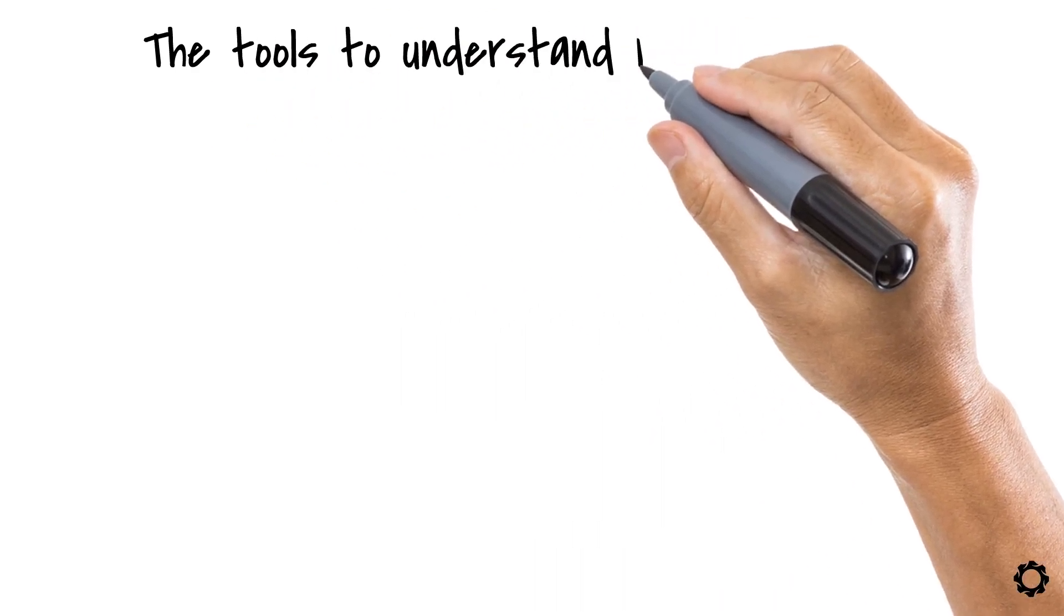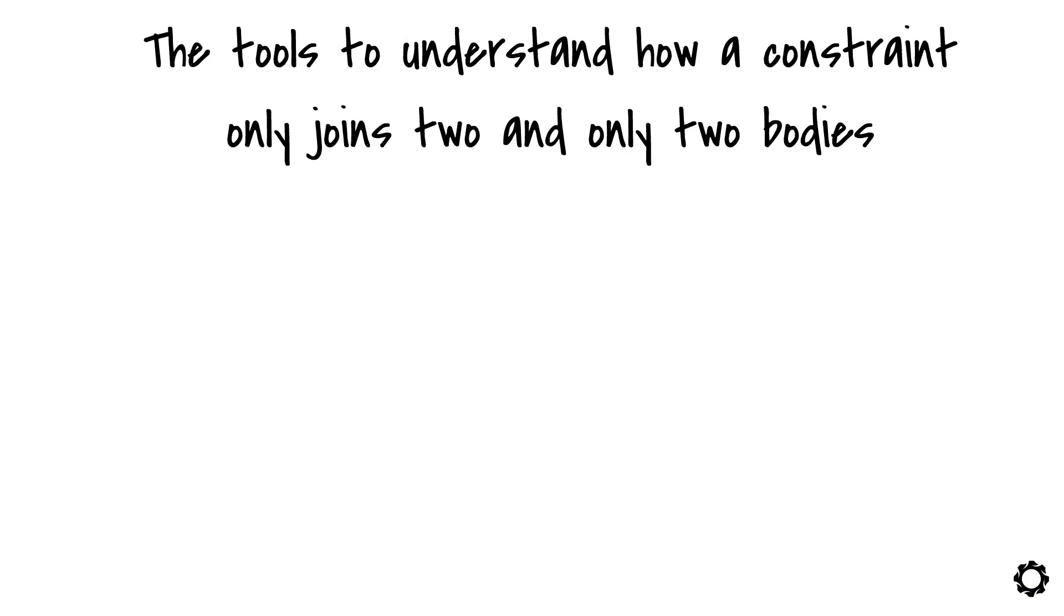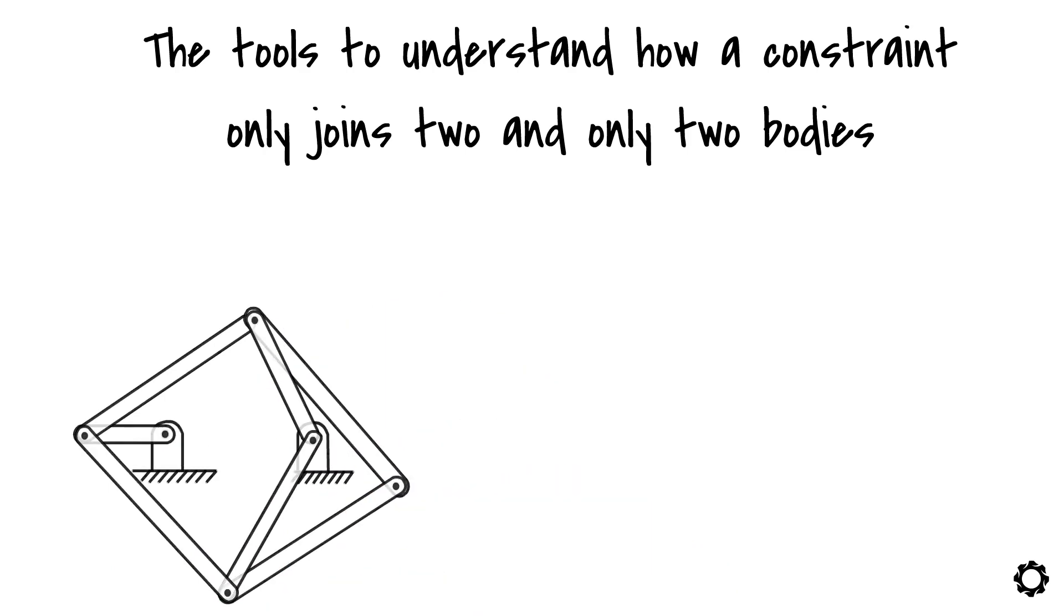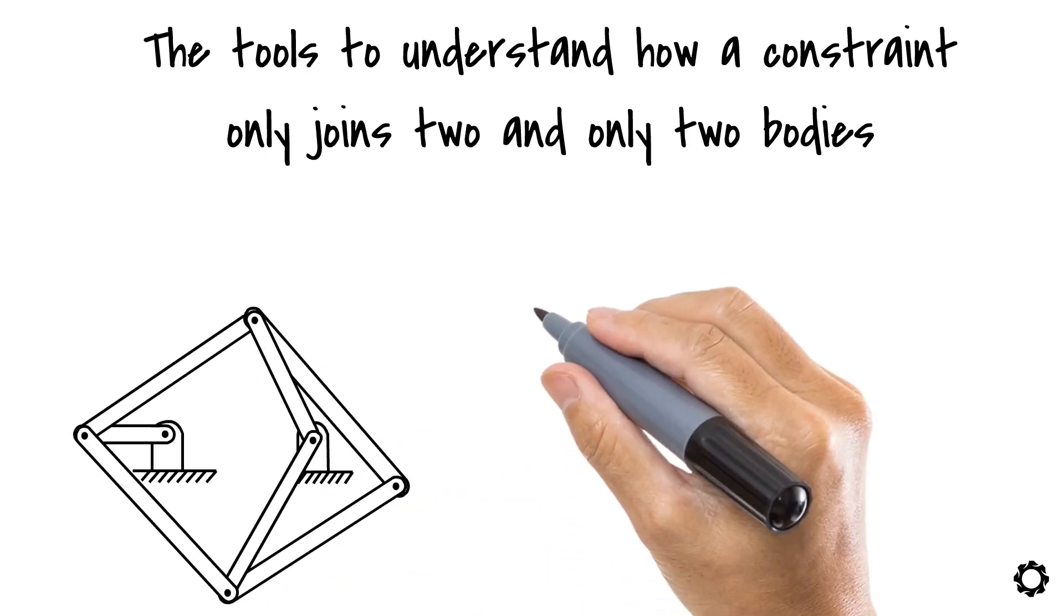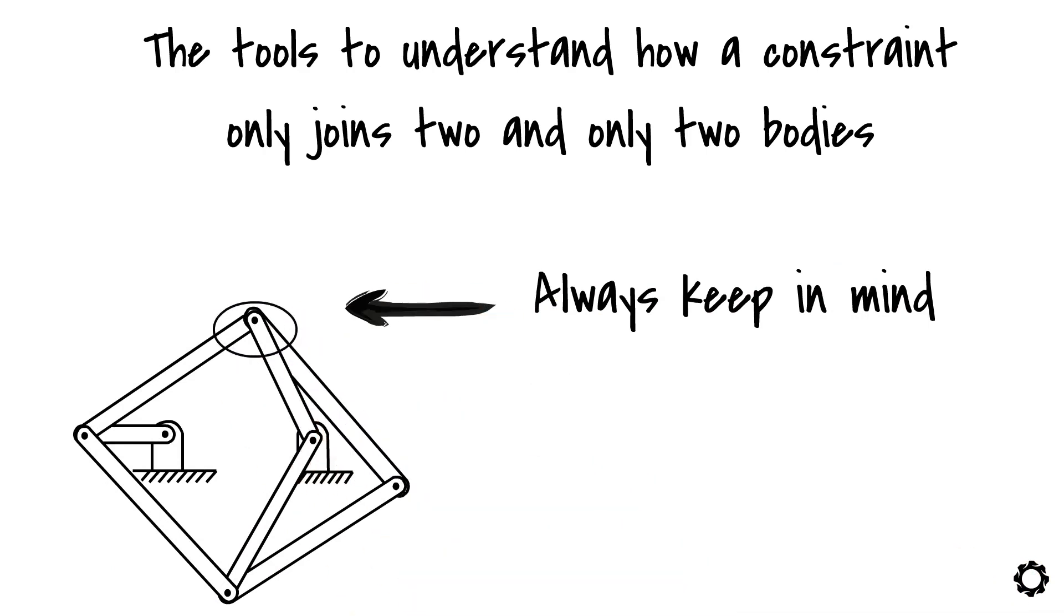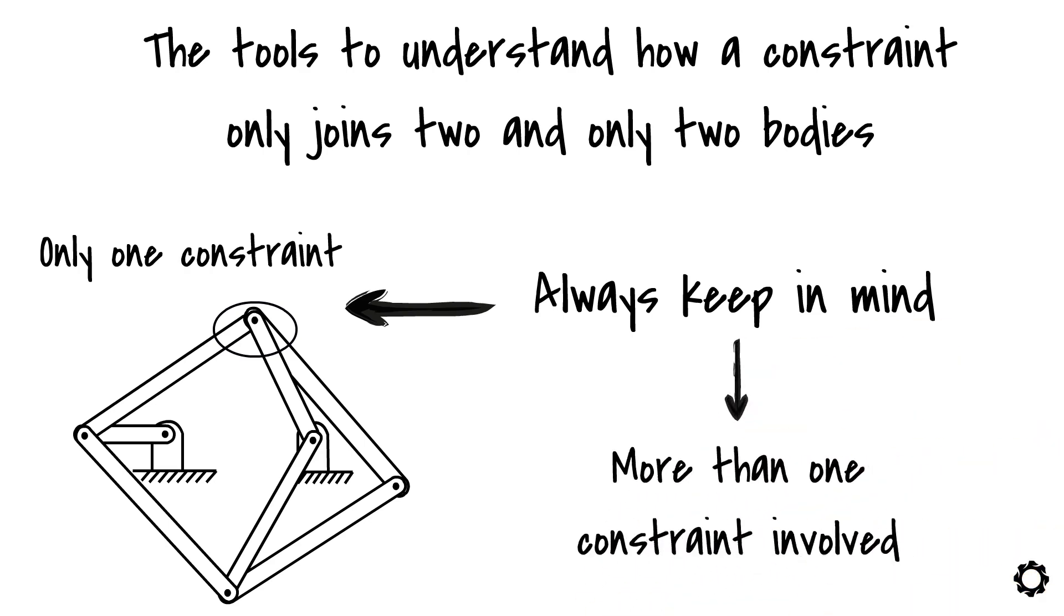I will give you the tools to understand how a constraint only joins 2 and only 2 bodies. You might say, well, I've seen mechanisms where more than 2 bodies appear to be attached in one point. And you are right. However, always keep in mind that when more than 2 bodies reach a point, or you think that only 1 constraint is taking care of joining more than 2 bodies, it really means that there is more than 1 constraint involved. But let's go back to the revolute joint.